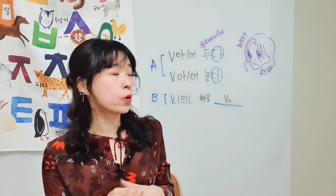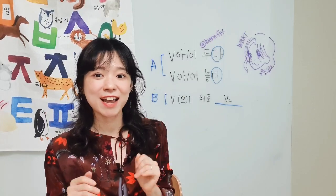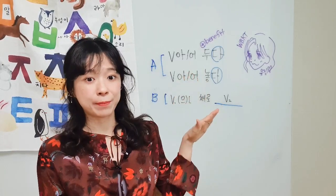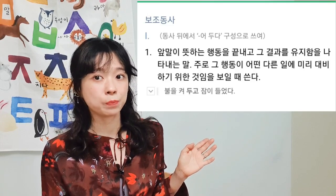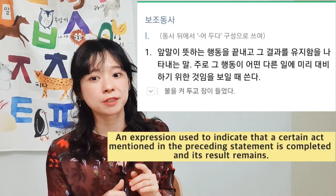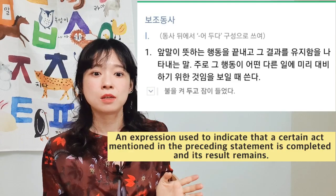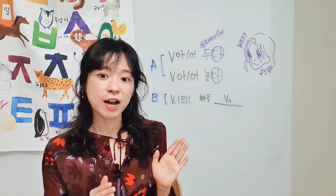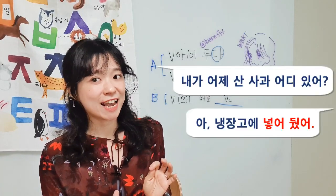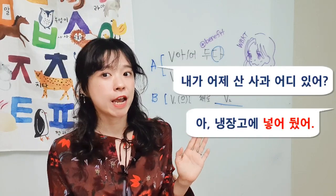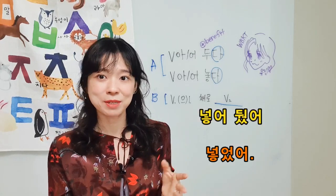To understand the differences among 아/어 두다, 아/어 놓다, and 은채로, let's check the exact meaning of each phrase and then see the differences. First, 아/어 두다: 앞에 말이 나타내는 행동을 끝내고 그 결과를 유지함을 나타내는 표현. An expression used to indicate that a certain act mentioned in the preceding statement is completed and its result remains. For example: where is the apple I bought yesterday? 내가 어제 산 사과 어디 있어? Oh, I've put it in the refrigerator. 냉장고에 넣어뒀어. Is it different from 냉장고에 넣었어, without 아/어 두다?